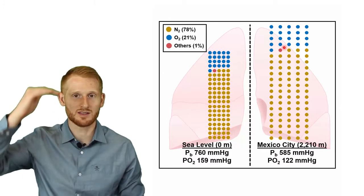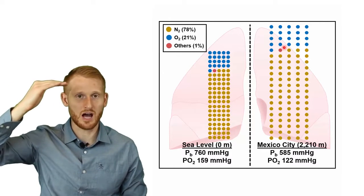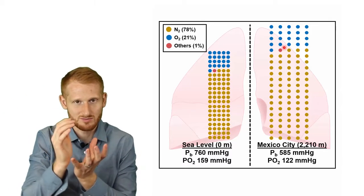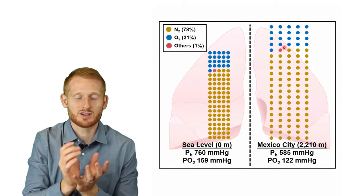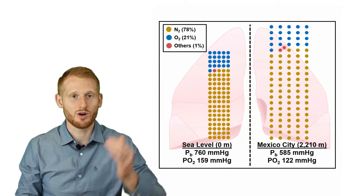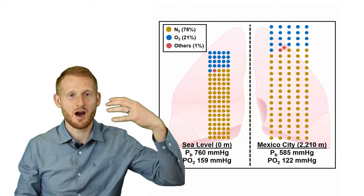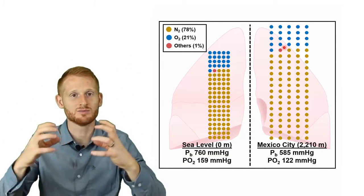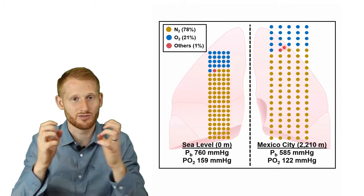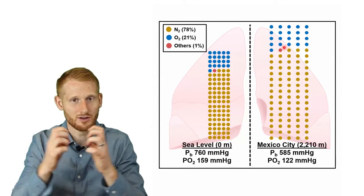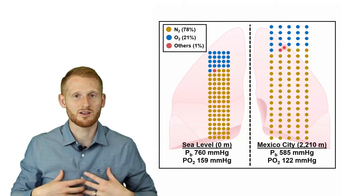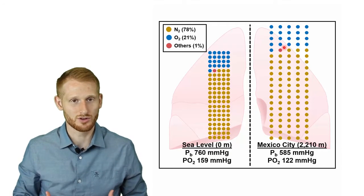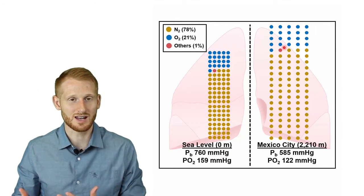Think of it like having a bunch of weight sitting on top of you, pushing you into a smaller space — you feel that pressure. Air works the same way. When you go up in elevation, there's less air above those molecules, so there's less pressure pushing them together, making them more spread out. The volume of your lungs doesn't change — if your lungs are five liters, they're still five liters at altitude.